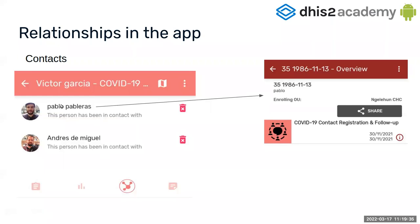Victor has one relationship with Pablo and another one with Andres. If you click on Pablo, you can see some enrollment details and you can even navigate to Pablo's TEI dashboard. Another thing you can do is delete the relationship.